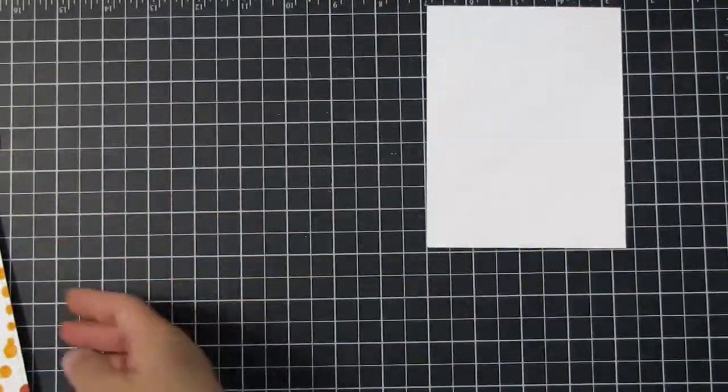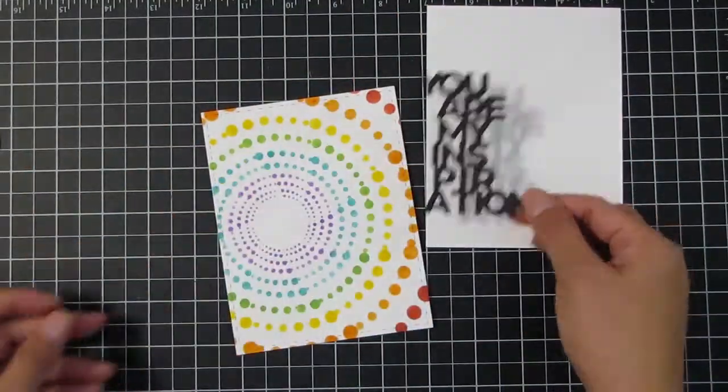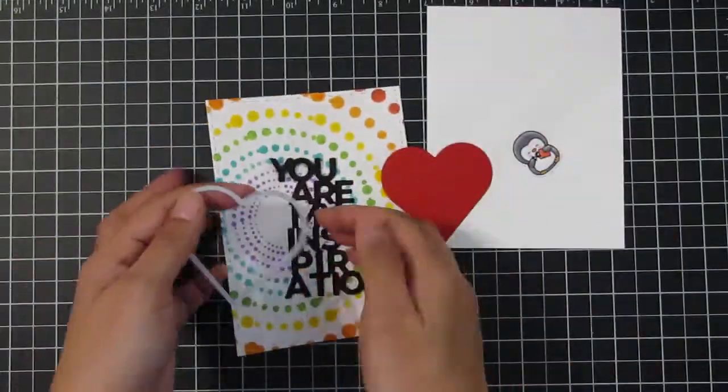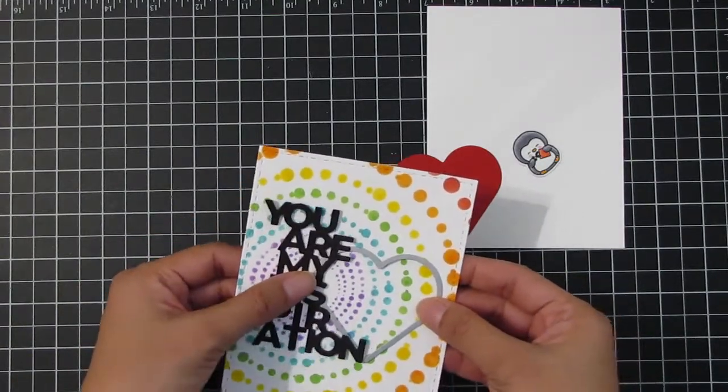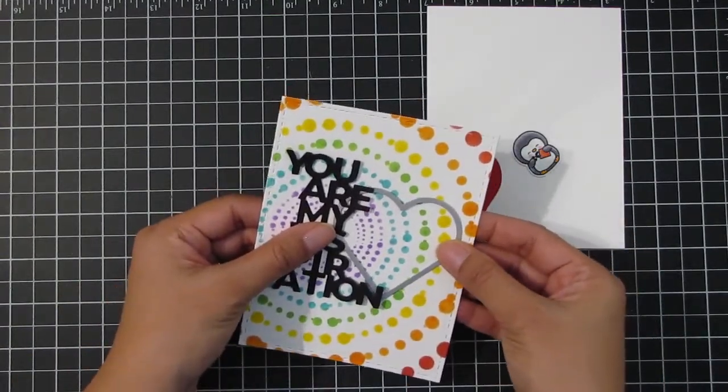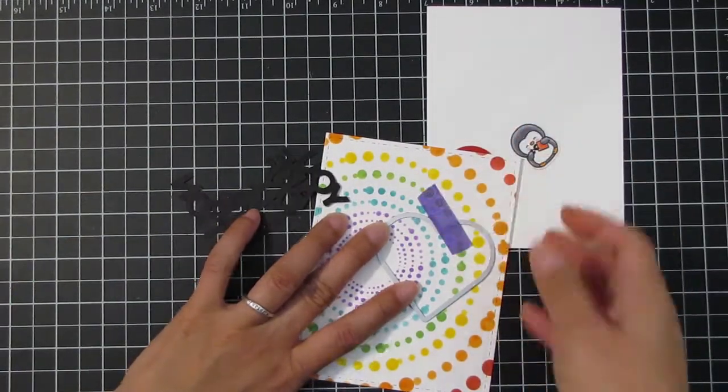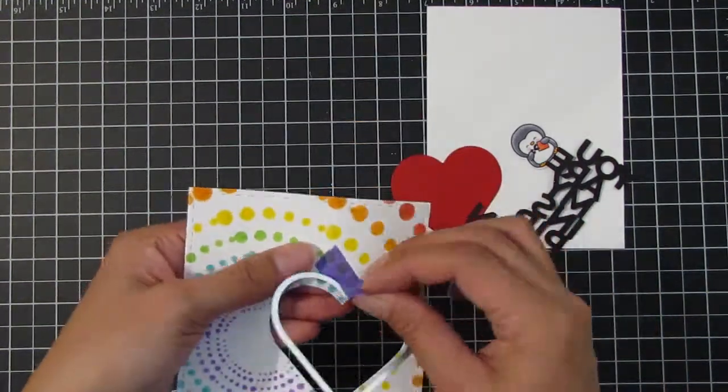Let's put the card together. That's my base, A2 size, 4.25 by 5.5 inches. You can see I cut out the stenciled portion, not centered but off to the right. I cut it with the Dots Meet Dashes die using the larger die of the rectangles. Then I cut the You Are My Inspiration in black cardstock.